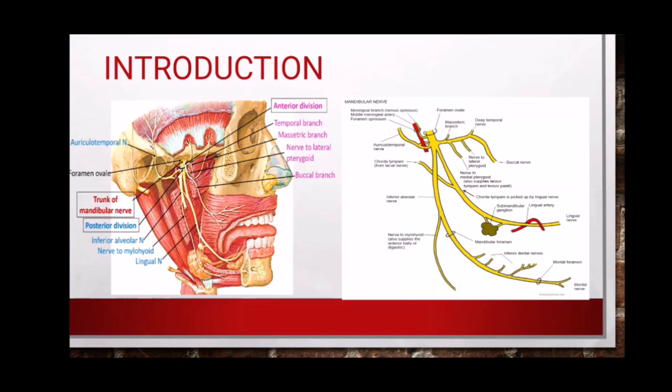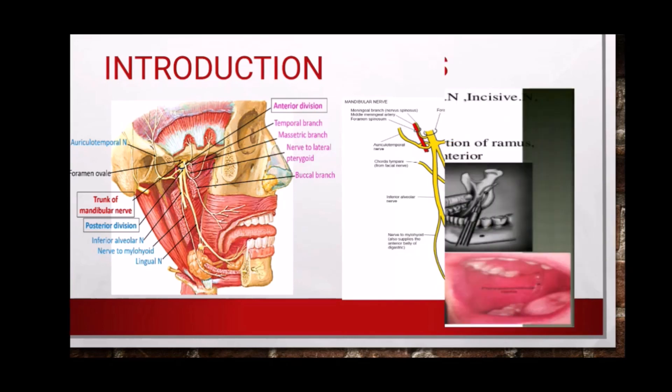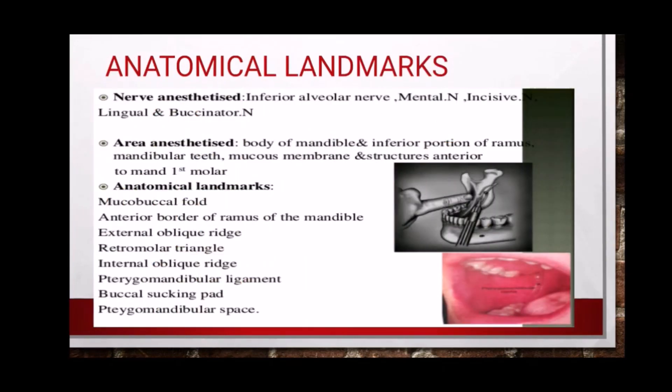The inferior alveolar nerve arises from the mandibular nerve, specifically from the posterior division of the mandibular nerve. The nerves anesthetized are the inferior alveolar nerve, mental nerve, incisive nerve, and sometimes the lingual and buccinator nerve.